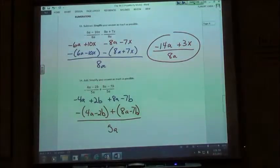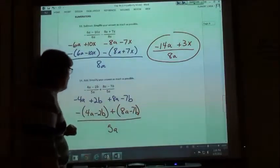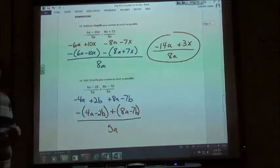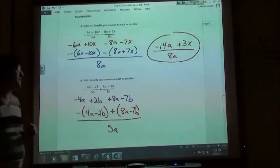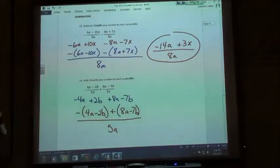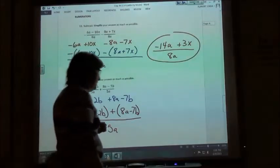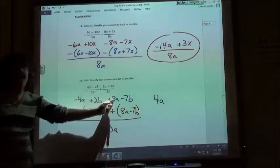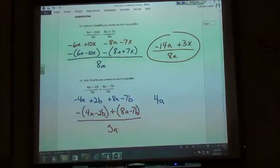So now combining my like terms, I'm going to get a negative 4a. Do that again. Negative 4 plus 8 is a positive, right? Because I have to have the sign of the larger. So positive 4a.